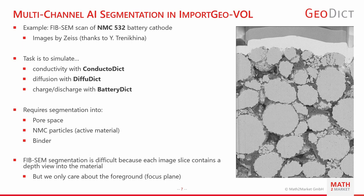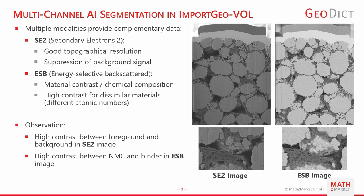FIBSEM segmentation in general is difficult because each image slice contains a depth view into the material, so you can also see the following slices shining through. In segmentation, we only care about the foreground — the focus plane at the very front. With FIBSEM especially, we can make use of multiple image modalities if the instrument provides them. Two of these are secondary electrons (SE2), which gives good topographical resolution and suppression of the background signal, and ESB (energy selective backscattered), which gives high contrast between different materials, especially those with different atomic numbers — as is the case here with NMC and binder particles.